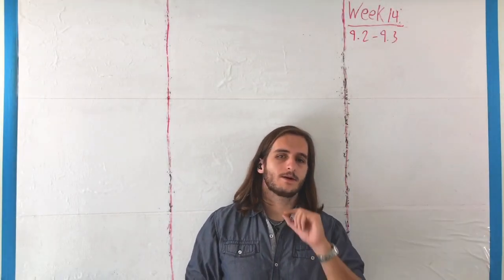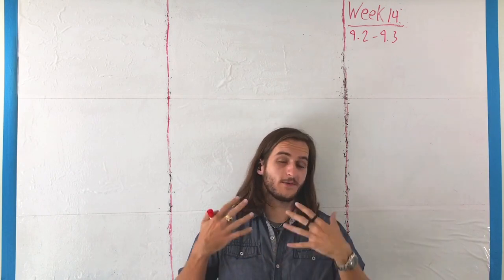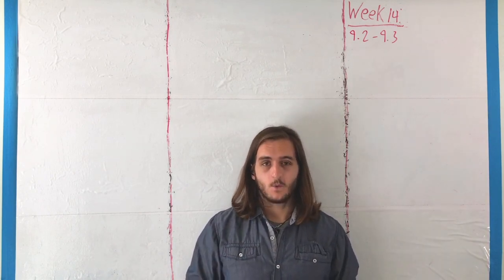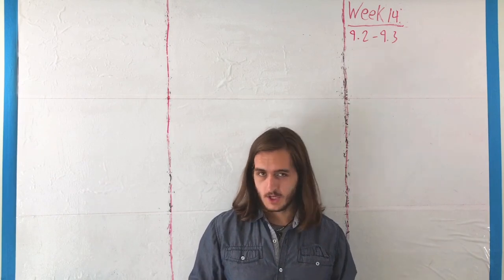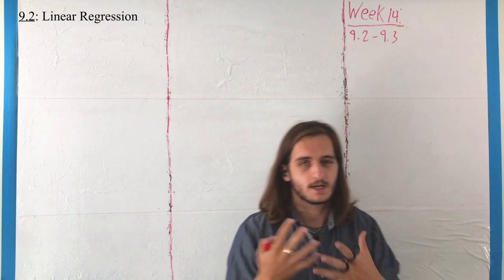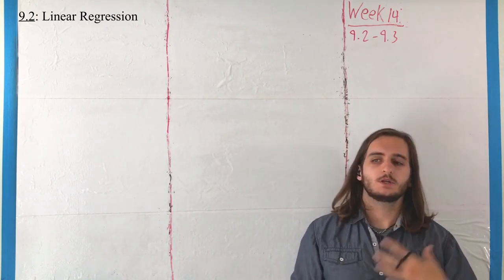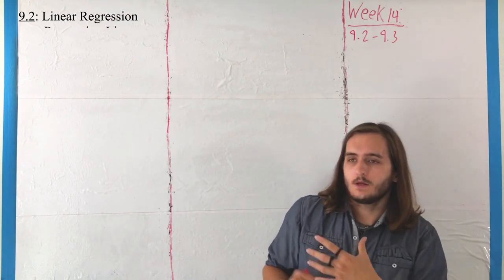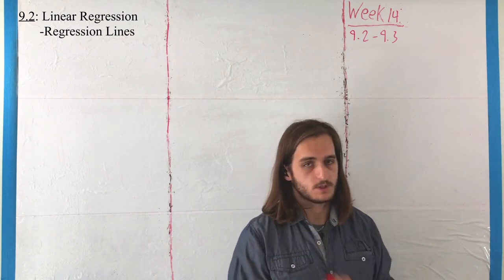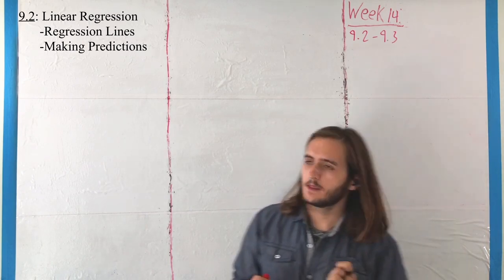Hello again, everyone, and welcome to our last week of new material for the semester. We are finally almost there, where this week we're finishing up Chapter 9 with 9.2, looking at regression, where regression is kind of an extension of the things we talked about with correlation. In particular, we're looking at how we can make predictions based on the supposed relationship between our independent and dependent variable.